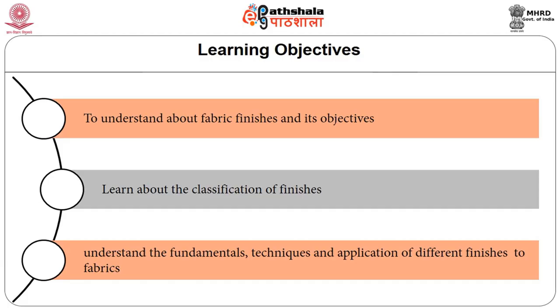A finish is any treatment given to a fabric after weaving or knitting to change its appearance, hand and performance. When a finish is applied, say on cotton, it may become shiny, stronger, or resist shrinking on washing. Similarly, other finishes may make the fabric softer or stiffer, water or stain resistant. In order to impart the desired functional properties, the material is subjected to different kinds of physical and chemical treatments.